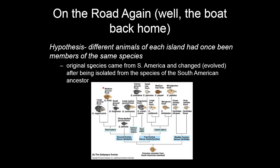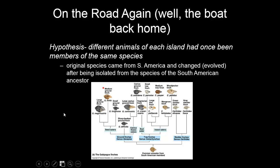His hypothesis was that different animals of each island had once been members of the same species. What Darwin is saying — and this was very new, and Darwin was disturbed by this idea because it completely went against his religion and the beliefs of the day — was that there was a common ancestor, most likely in South America, that by some chance encounter ended up on the Galapagos Islands. From there, that ancestral population diversified based on the changing environment into all the different finch species in the Galapagos. Darwin knew he had to get a lot of evidence to show this was true. The problem is this probably happened over a very large amount of time, so it's difficult to observe evolution in action.